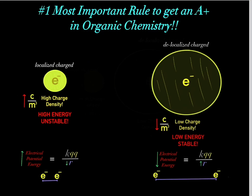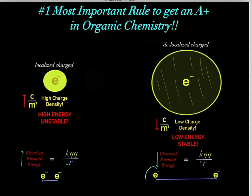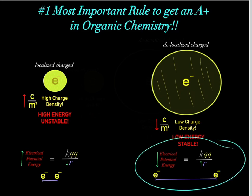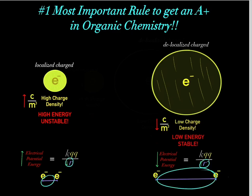Nature always tries to go from high energy systems to low energy systems. In this example, we have all that negative charge in close proximity with high negative charge density. However, if these charges spread out and were further away from each other, the system would be in a lower energy state, which is stable. Nature loves lower energy systems because they're more stable.